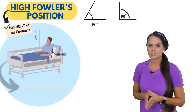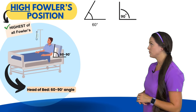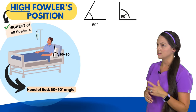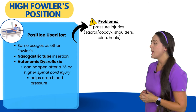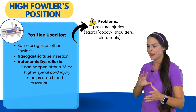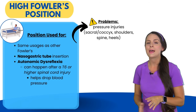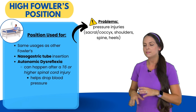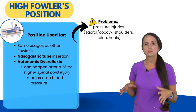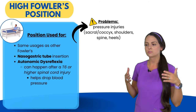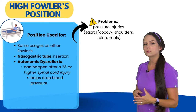Lastly, we have high Fowler's position, which is the highest of all the Fowler's positions, with the head of the bed at about 60 to 90 degrees — so the patient is sitting straight up in bed. This position has the same general uses as the other Fowler's positions, but it's very helpful for nasogastric tube insertion. It's also indicated if the patient is experiencing autonomic dysreflexia, which only occurs in patients with a spinal cord injury at T6 or higher. Putting the patient at 90 degrees will drop their blood pressure. With this position there's a risk of pressure injuries to the sacral and coccyx area, the shoulders, spine, and heels due to the pressure of sitting straight up.